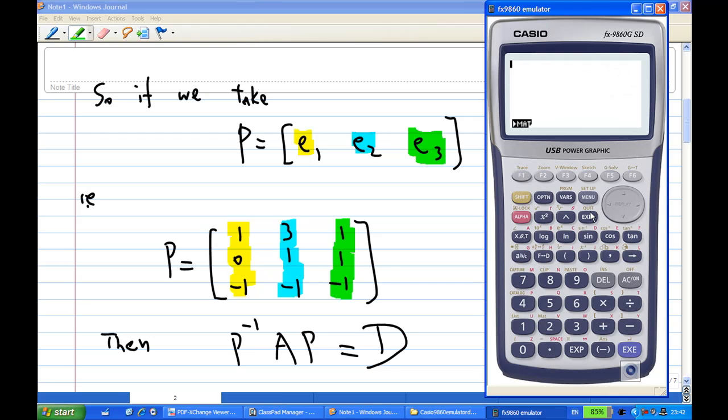Alright. And then, I exit again. So, now I am ready to do calculation. I need to find P inverse A, P. So, in my matrix now, P is stored inside B. So, I am going to use Option. Press F2 for matrix.